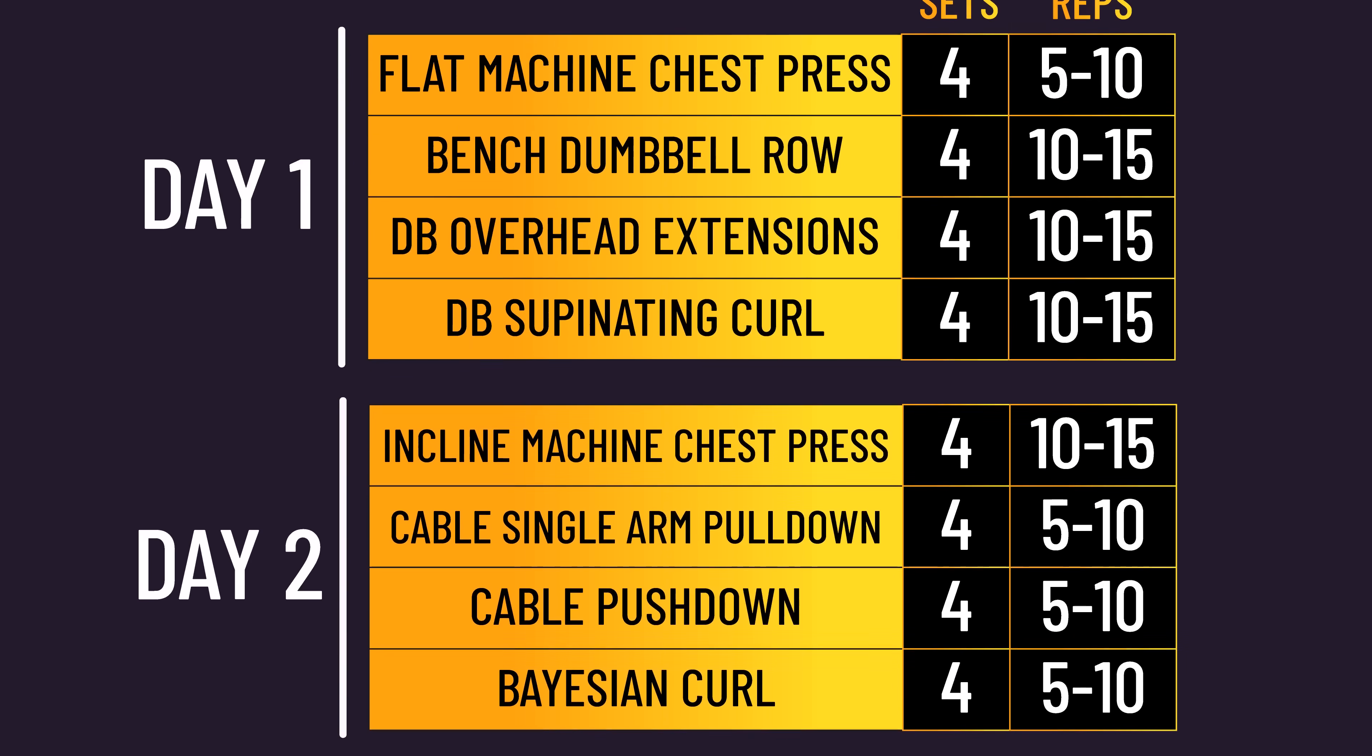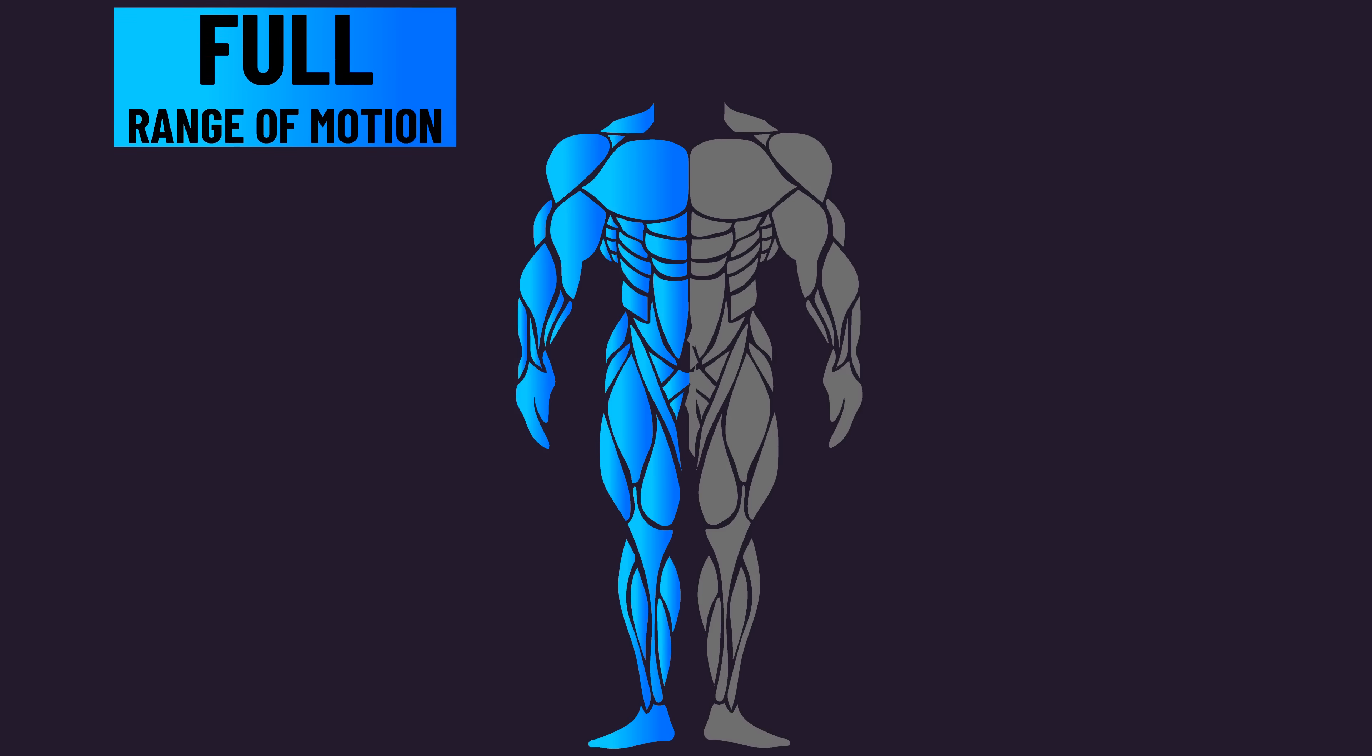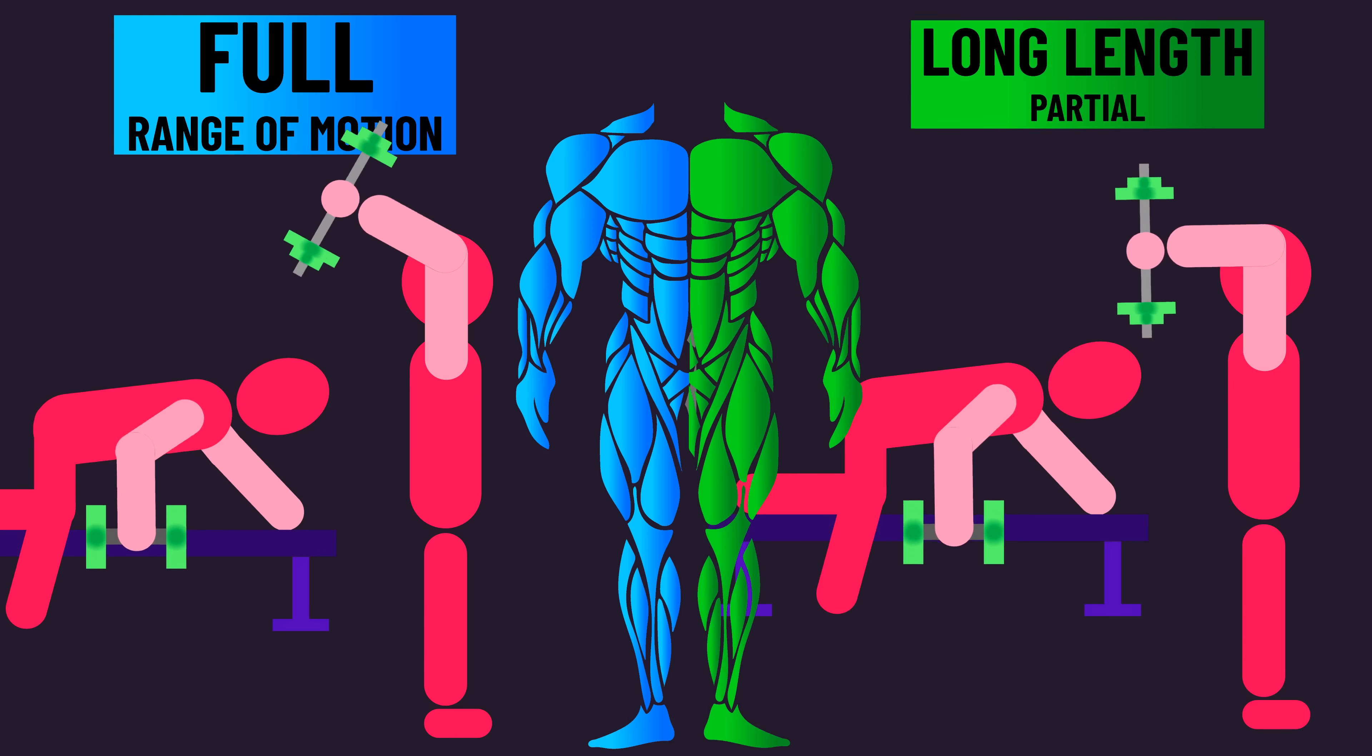They trained these exercises twice per week for eight weeks. One side of their body trained with a full range of motion on all exercises, while the other side of their body trained with a partial at long lengths on all exercises.